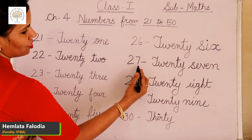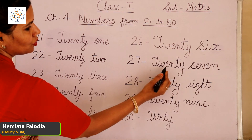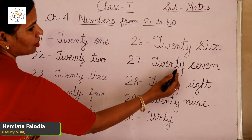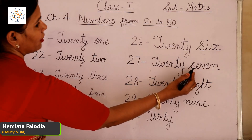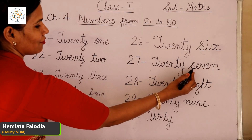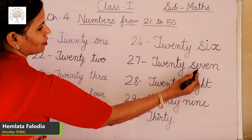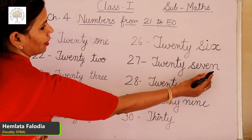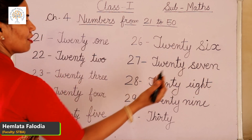Next, 27. T-W-E-N-T-Y, 20 and 7. S-E-V-E-N, 7. This is 27.